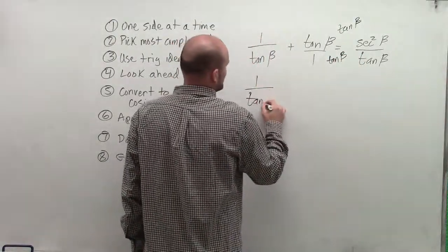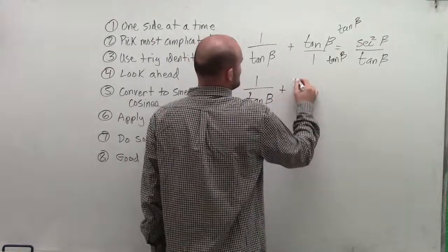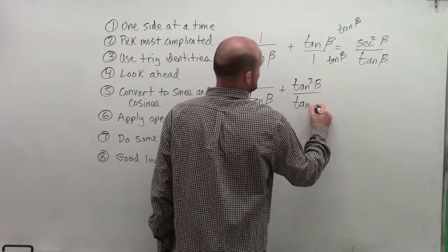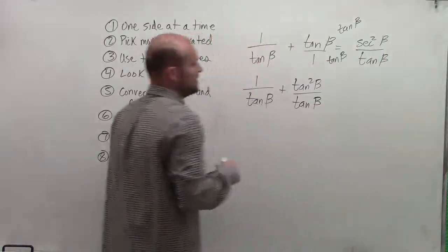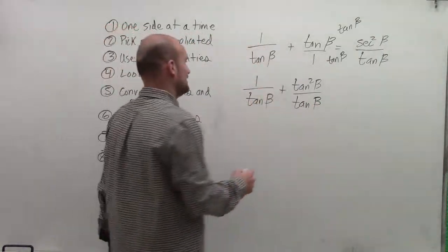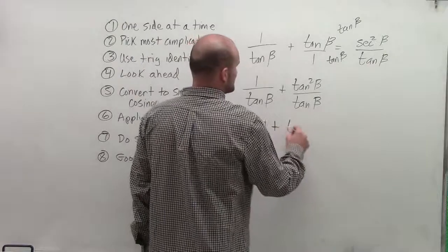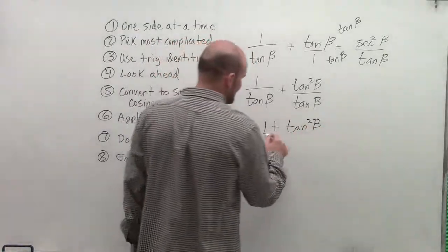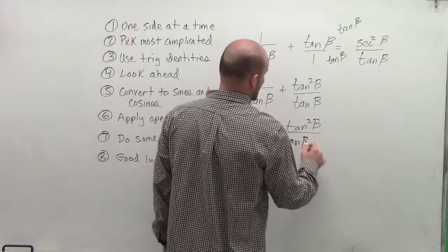Therefore, I'll have 1 over tangent of beta, plus tangent squared of beta over tangent of beta. Therefore, now I can simply combine my like term to say 1 plus tangent squared of beta, sorry, there's the bell, divided by tangent of beta.